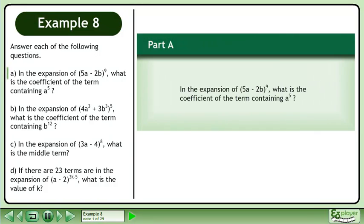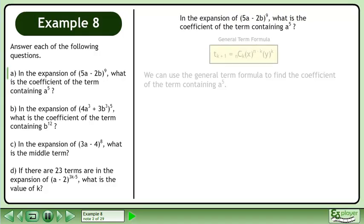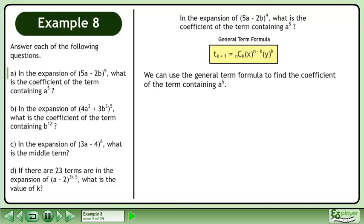In the expansion of (5a - 2b) raised to the power of 9, what is the coefficient of the term containing a to the power of 5? We can use the general term formula to find the coefficient of the term containing a to the power of 5.